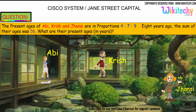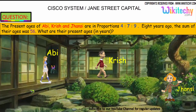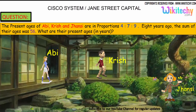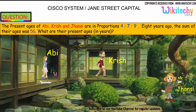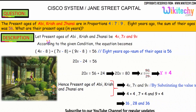Let's move on to the next problem. Abhi, Krish, and John C. are in the proportion of 4 is to 7 is to 9. Eight years ago, the sum of their ages was 56. What are the present ages? The present ages of Abhi, Krish, and John C. are in the proportion 4:7:9, so we take them as 4x, 7x, and 9x.